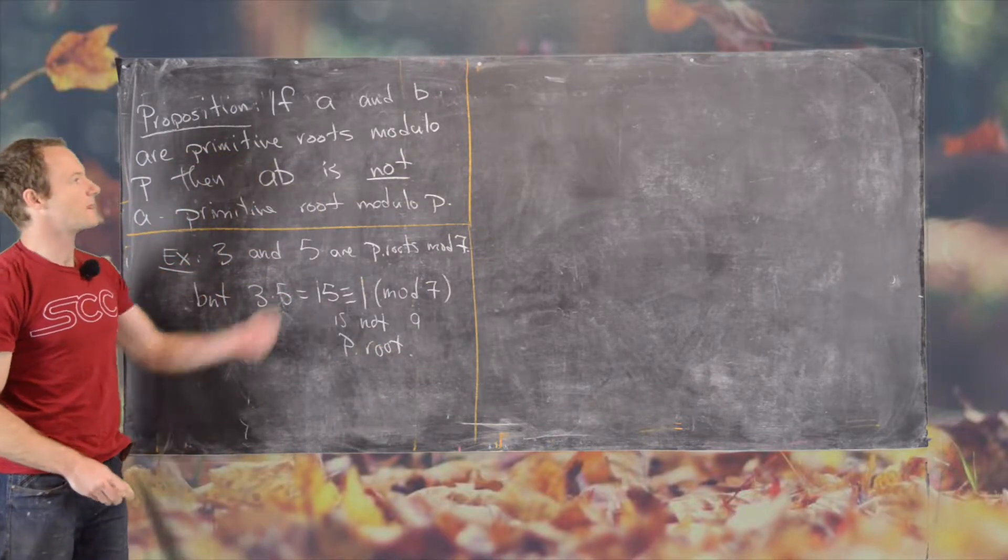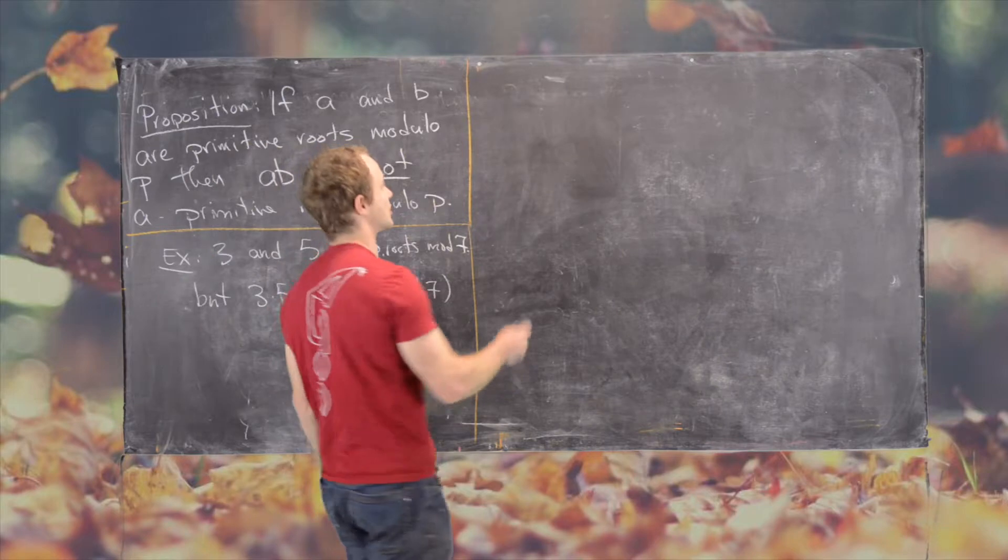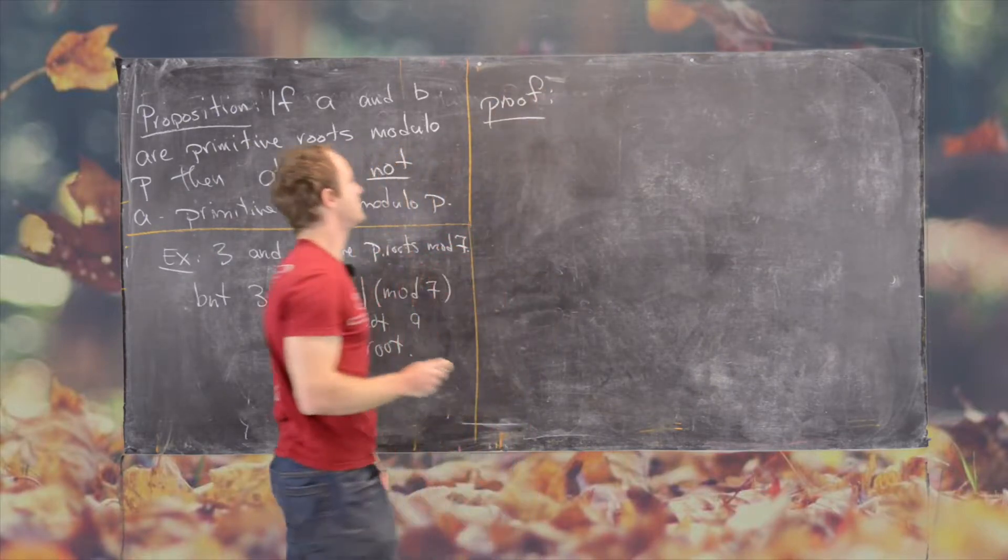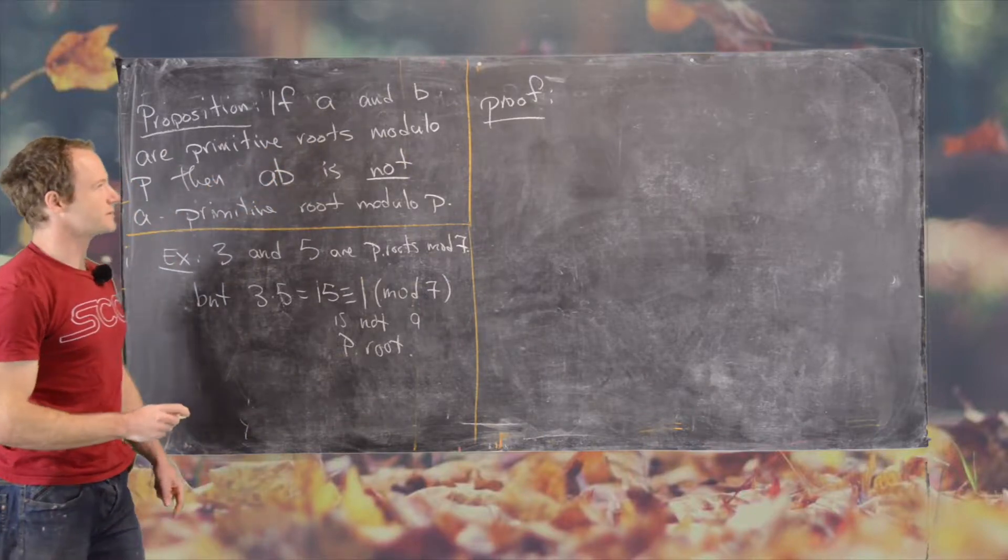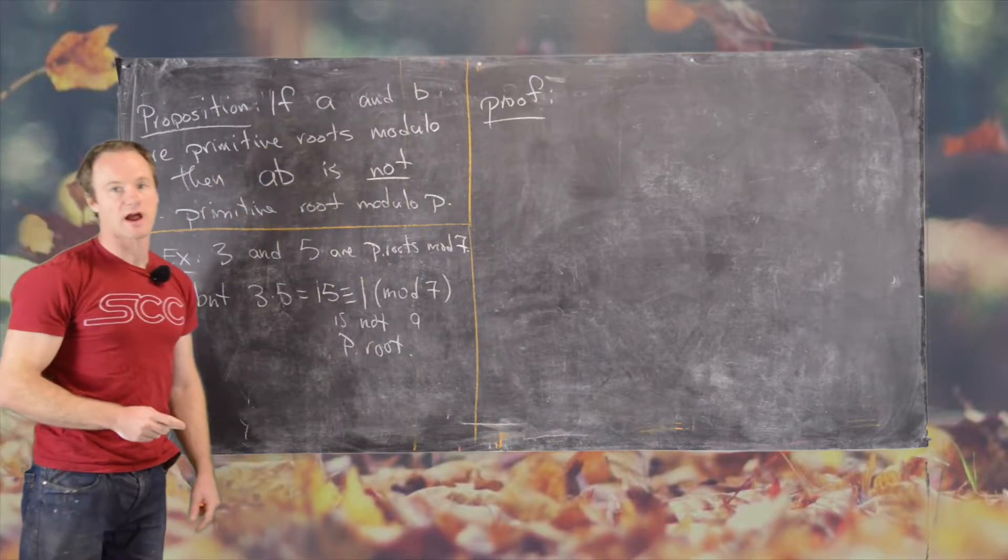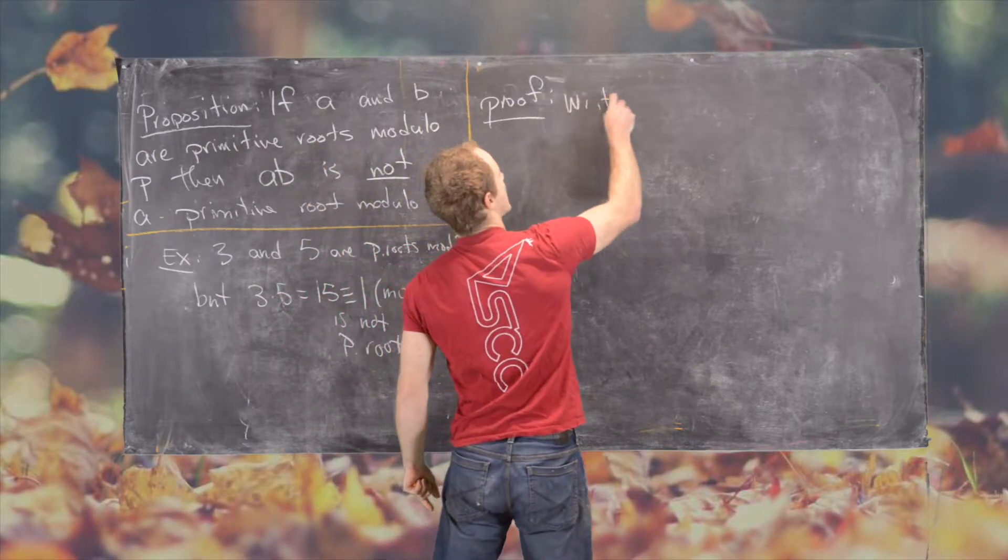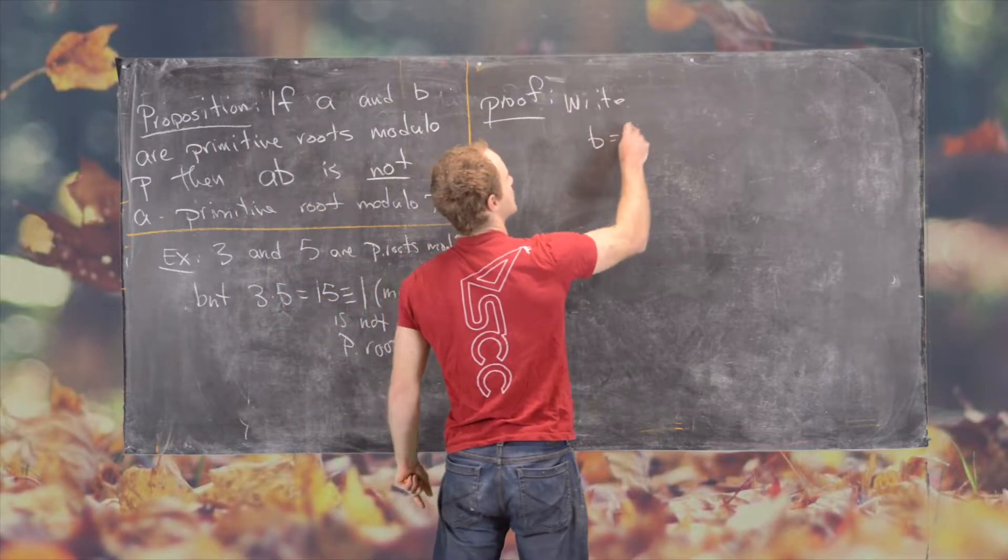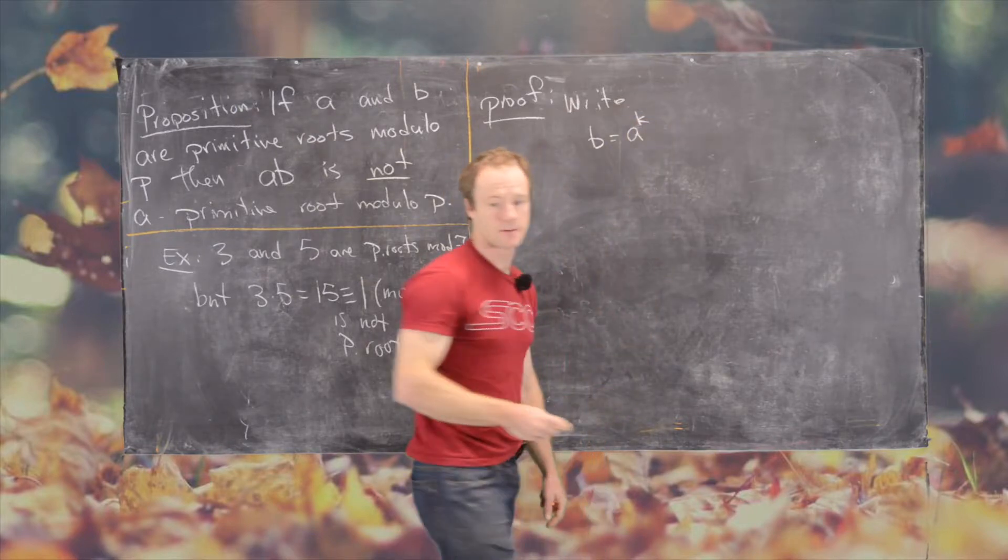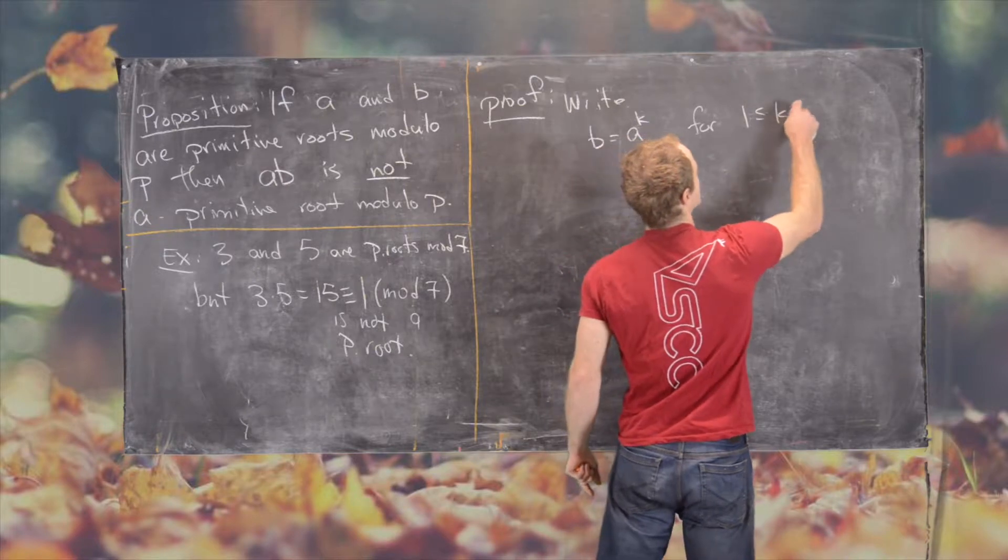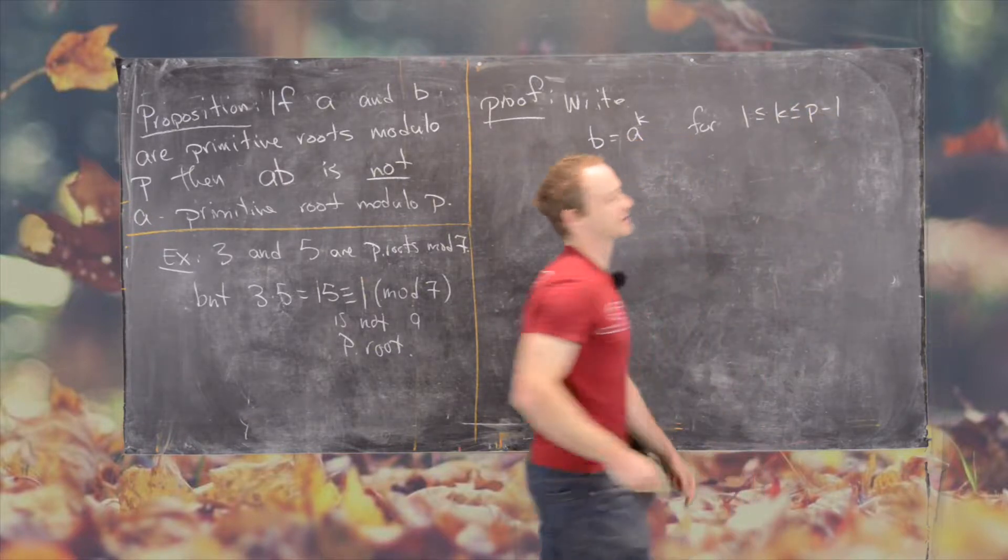So let's get into the proof of this statement in general. Okay, so since A is a primitive root, that means that we can write B as follows. So we can write B equals A to the K for K between 1 and P minus 1.